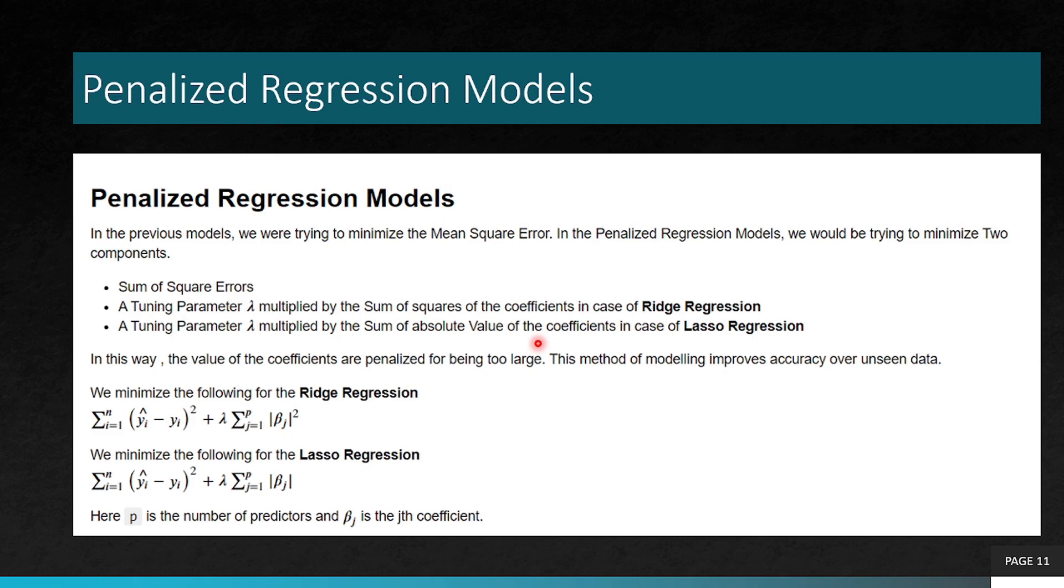If you are mathematically oriented, the following expression expresses what we have described in words. This one is the sum of square errors, Y hat minus Yi. This is the predicted variable and this is the actual variable. So this is sum of squares, and lambda is a tuning parameter. Here we are doing sum of squares of the coefficients. Beta is a coefficient and we are summing it up. So it is ridge regression, and for the lasso one it is the mod of the coefficient.